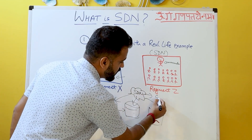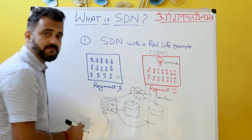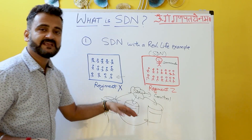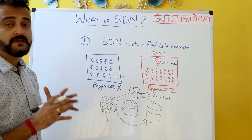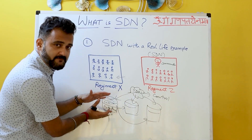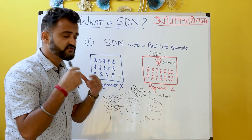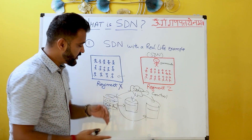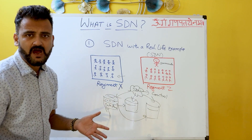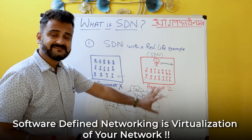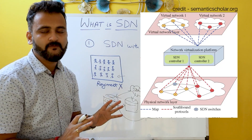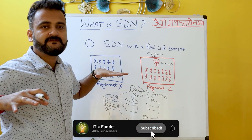SDN said everything on the control plane side will be handled by me, and everything on the data plane will continue to be handled by the individual devices. That made everything very easy, because now you have segregated the software part from the hardware part. All the things you want to configure, which you want to tell a particular router, can be done through software. Anything being done on the hardware device itself is a hardware activity.